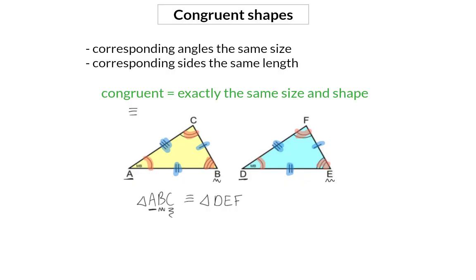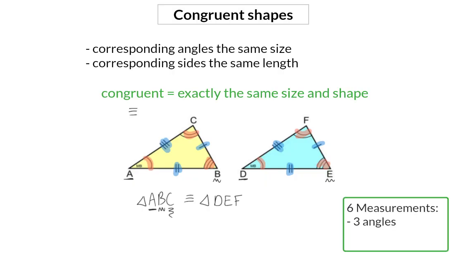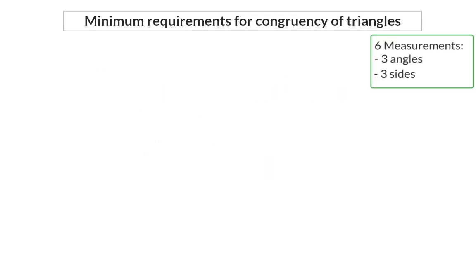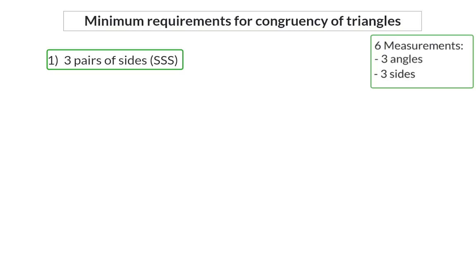For congruency of triangles, it is not necessary to know that all six measurements — the three angles and the three sides — are equal. Different combinations of only three of these measurements are needed to be able to say that two triangles are definitely congruent. Let's have a look at these minimum requirements. The first is when the three pairs of corresponding sides are equal, and for this we make use of the abbreviation SSS.